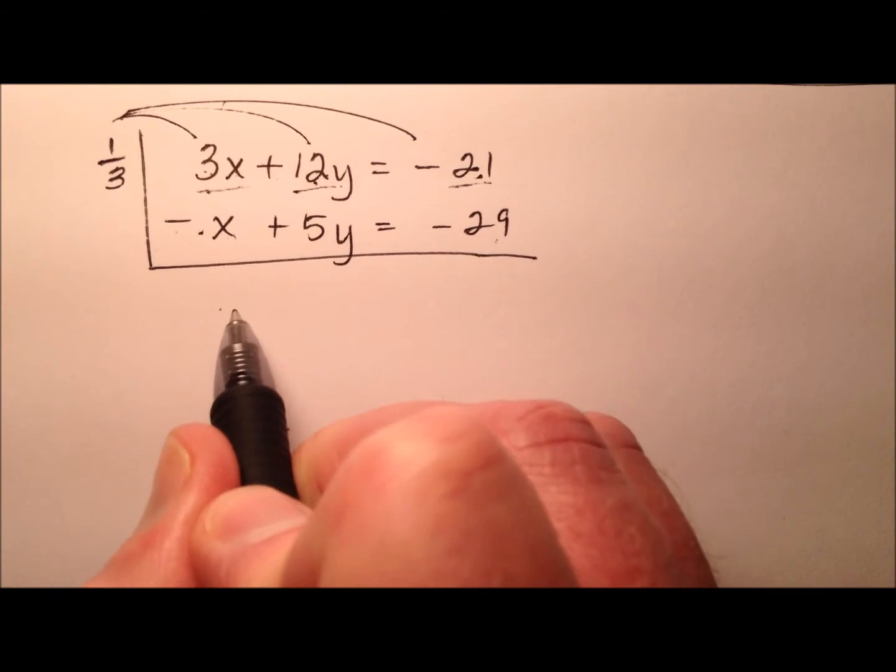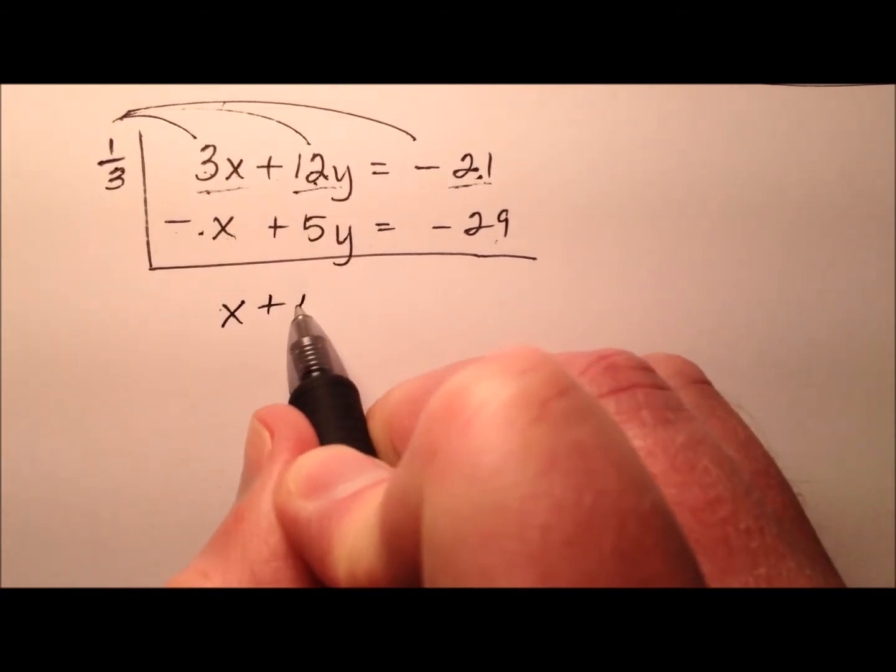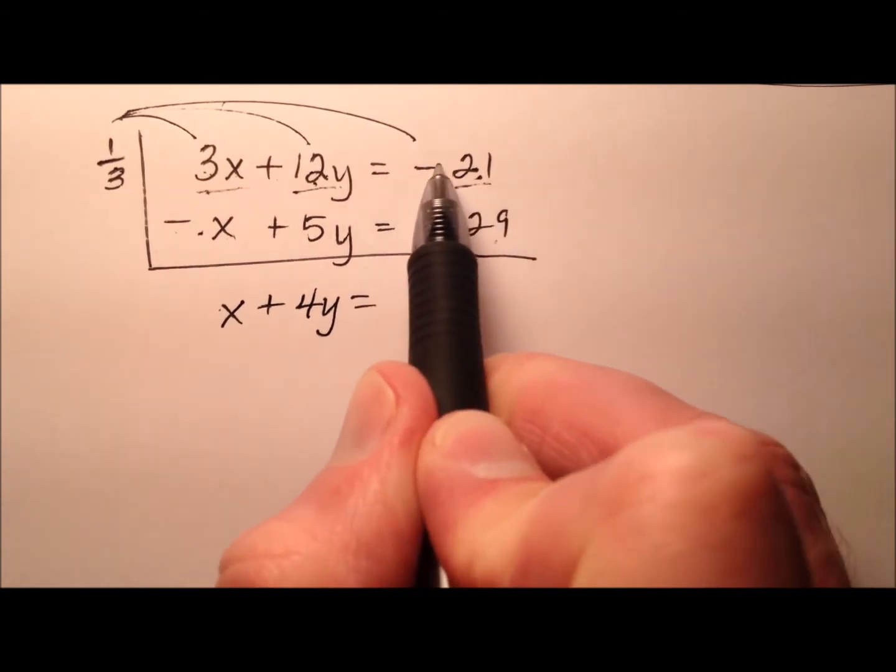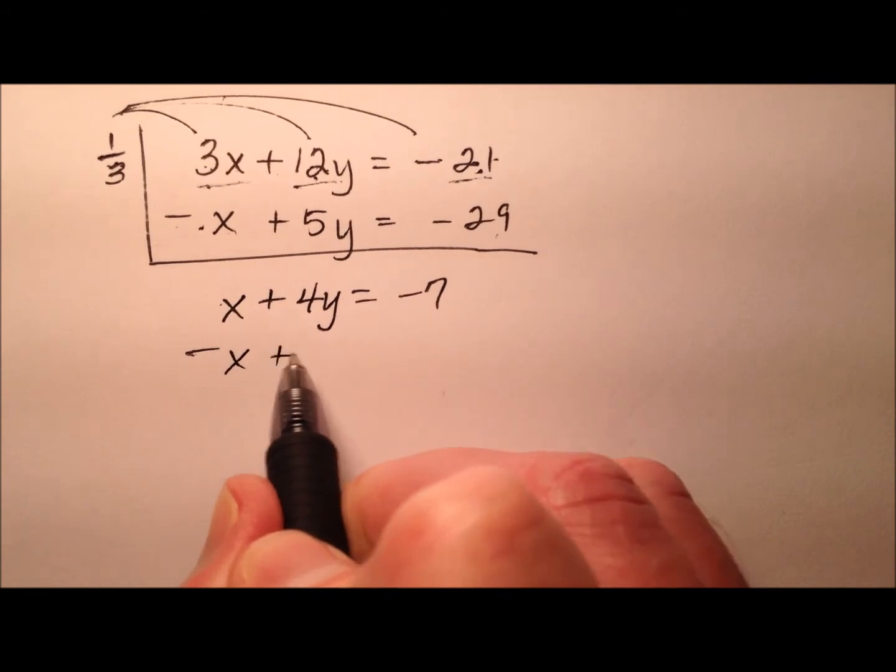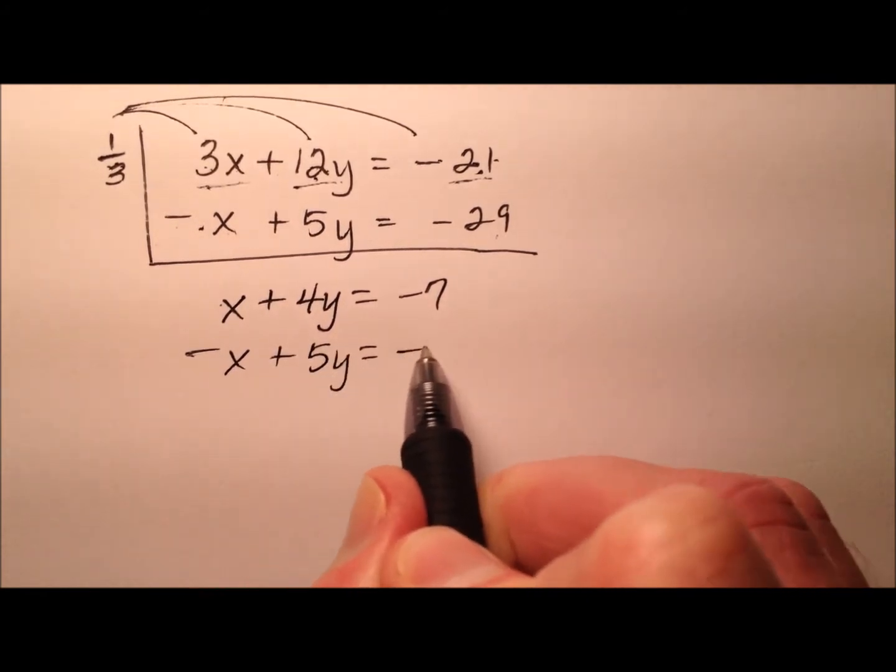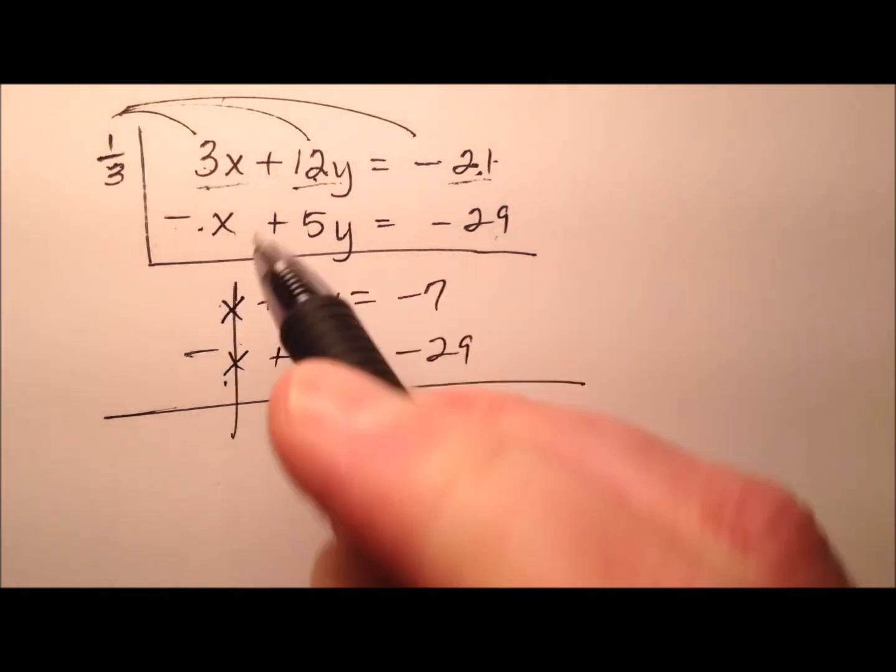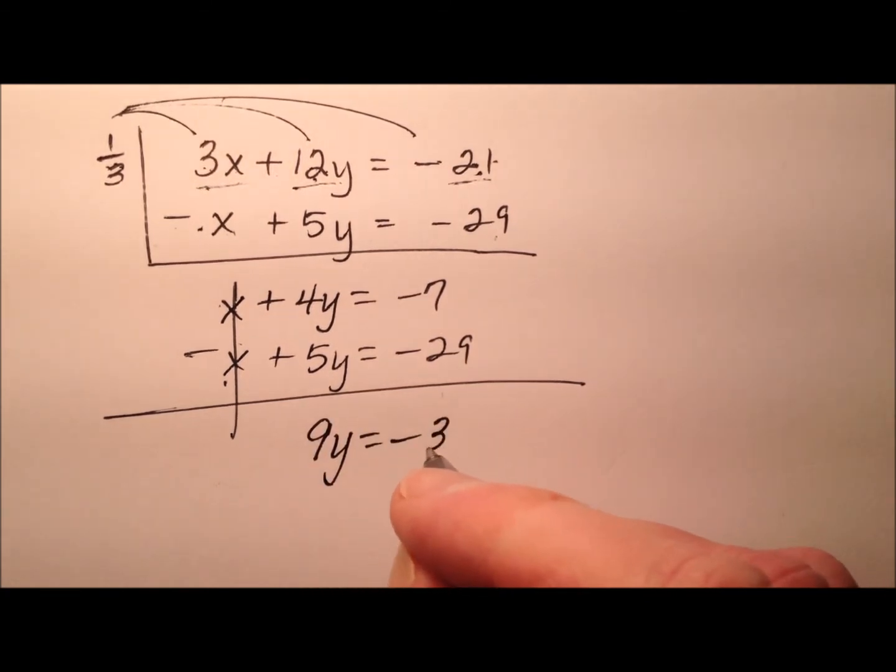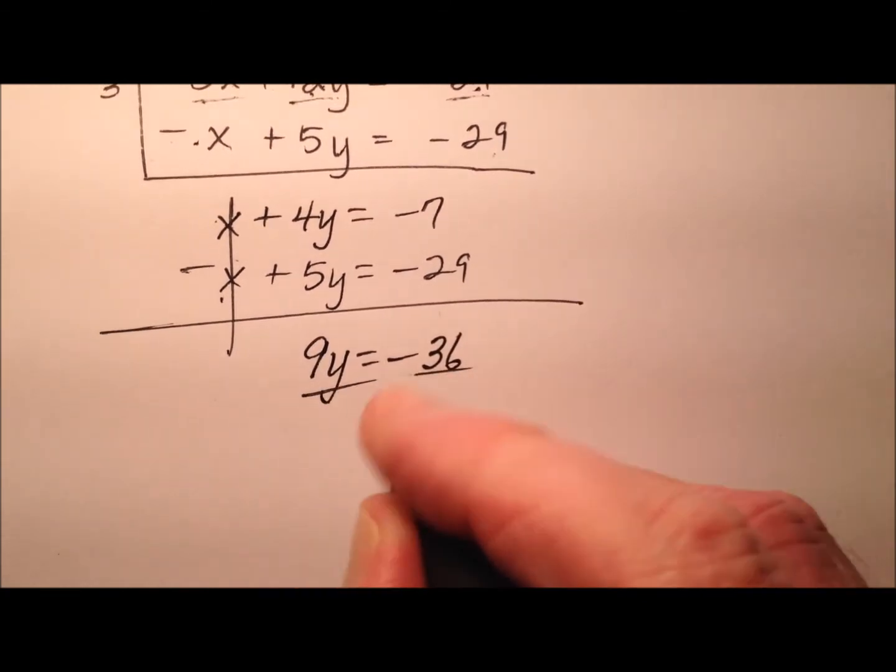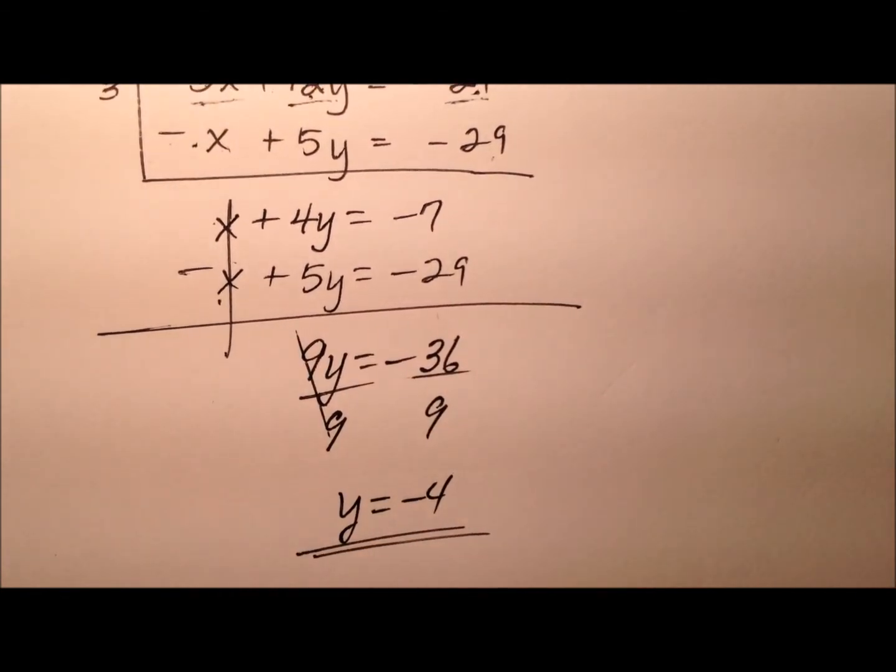So I'll have positive x and 12 divided by 3 is positive 4y and negative 21 divided by 3 is negative 7. So when I rewrite the second equation, which was unchanged, now I have x and a negative x and those cancel out already. So when I add them together, 9y equals negative 36. So division by 9 gives me y equals negative 4.